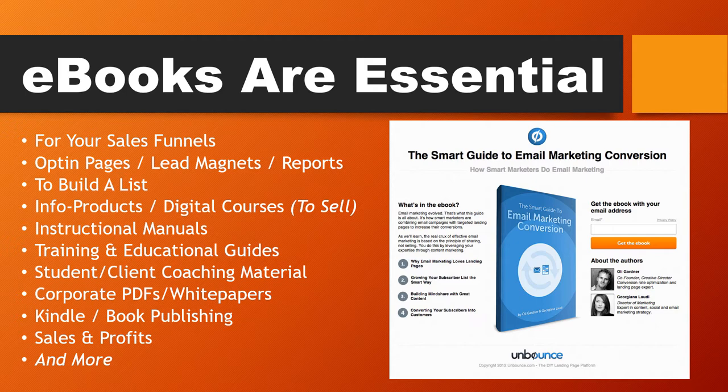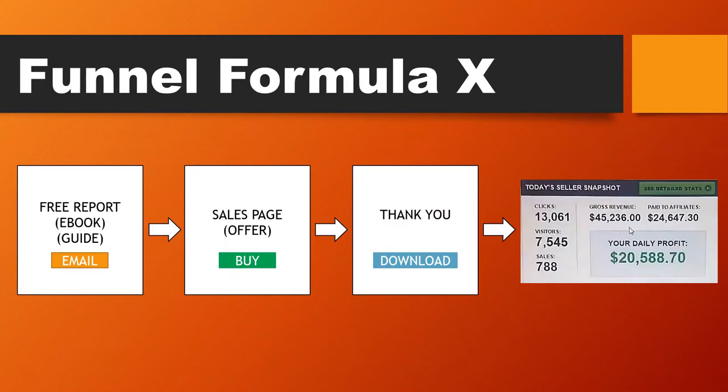There's a screenshot from Unbounce — to bring customers into their business and funnel, they've got an e-book out there to capture email addresses. Here's a basic funnel formula: at the beginning of the funnel, especially if you're a marketer, you have to give away a free report, an e-book, guide, white paper, or cheat sheet to capture a customer's email address. From there you send them to a sales page where you make an offer, and then you send the customer to download your e-book. That's the basis of making good revenue and good sales online, especially when it comes to digital products.